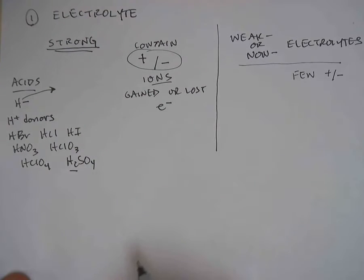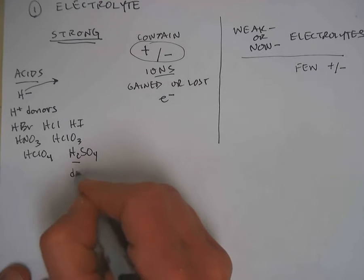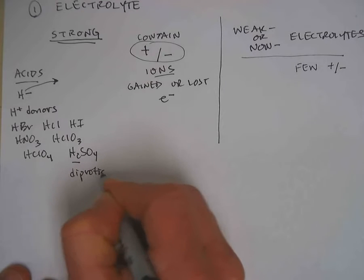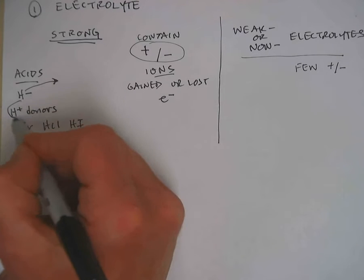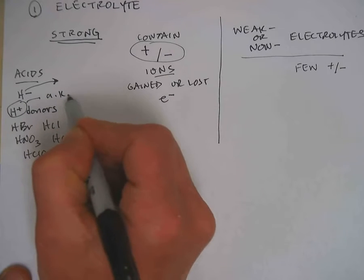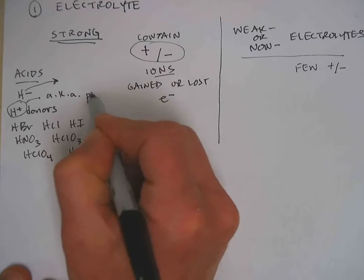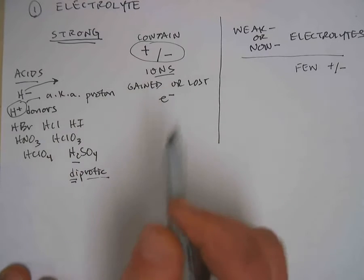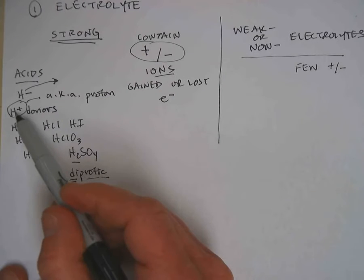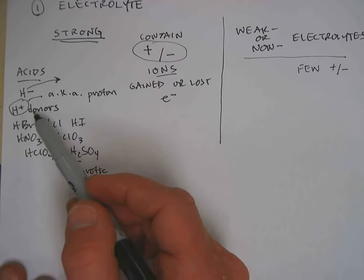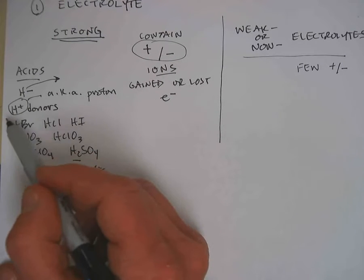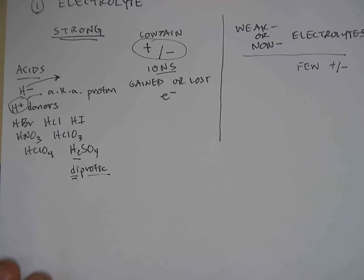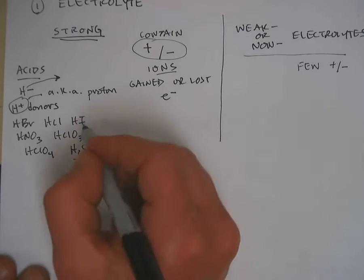Of which H2SO4 is known as a diprotic acid because it contains two, the prefix di means two, protons. H plus is also known as a proton because a proton is simply a hydrogen atom that has lost an electron.